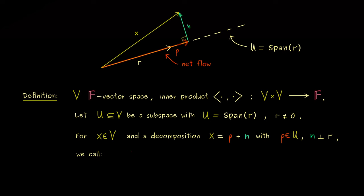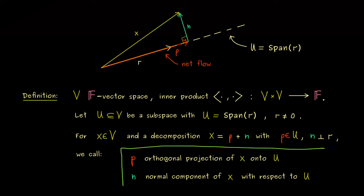So first, p should be an element in our one-dimensional subspace U. And second, the vector n should be orthogonal to the subspace U, which means n should be perpendicular to r. So this is exactly the picture. And you might already see with both properties here we might get a uniqueness for this decomposition. But before we do that, let's first write down the important names for the two vectors.